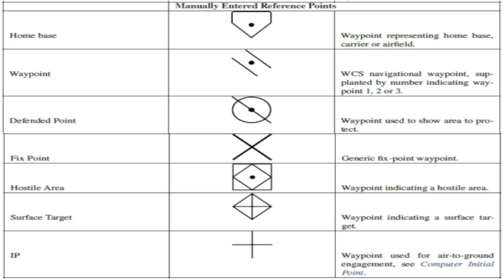Below that we have Hostile Area, normally a concentration of enemy troops or something like a SAM site that you should stay away from — this has the code HA. Surface Target would normally be your intended air-to-ground target if you are doing a ground attack mission, with the code ST. Then you have your Initial Point with the code IP, which is usually the point from which you will attack your surface target.